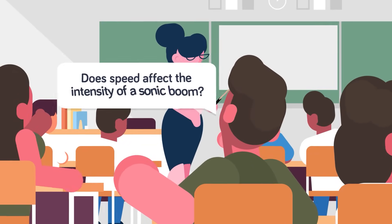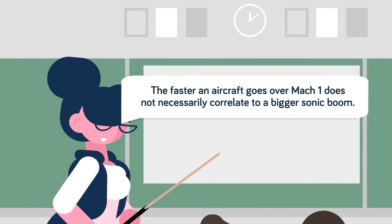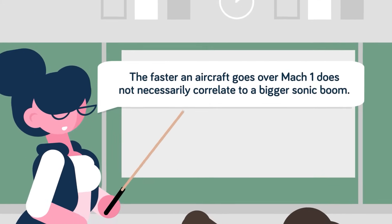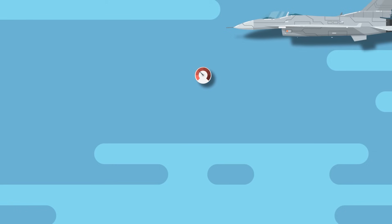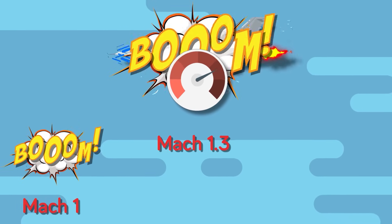Interestingly, speed doesn't have as much of an effect on the intensity of a sonic boom as you might think. The faster an aircraft goes over Mach 1 does not necessarily correlate to a bigger sonic boom. At speeds slightly faster than Mach 1, like Mach 1.3, there is a significant increase in the power of the sonic boom.